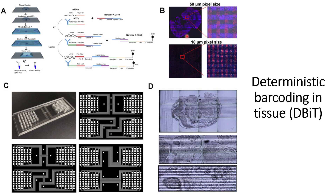That is how the barcodes are designed. Now let us look at some results on mouse hemorrhoid tissue. We can see that these are the 50 micrometer pixel size microfluidic channels, and we can see the square boxes stained at different sizes. The horizontal barcodes are stained with blue and the vertical barcodes are stained with red. At 10 micrometer pixel size we can see that the staining is also correct and there is no leakage from one channel to another. This is also a zoomed-out view of the mouse embryo at different microfluidic channel sizes.